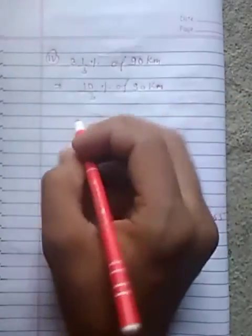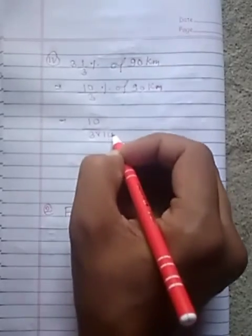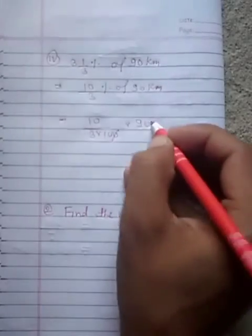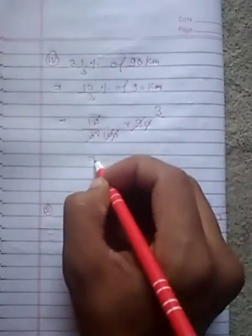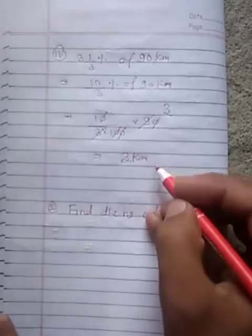Remove this symbol student. 10 upon 3 into 100 into 90. 0, 2, 0, 2, 0 reduce. This 0, this 0. 3, 3, 3 students, 9. Clear student? 3 kilometer. This is our answer.